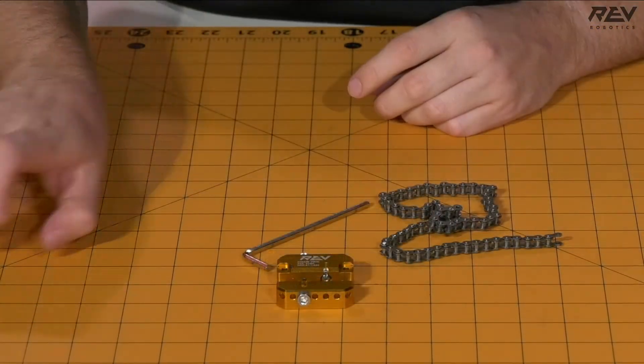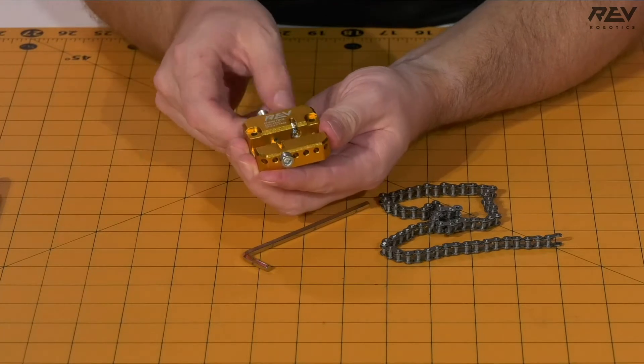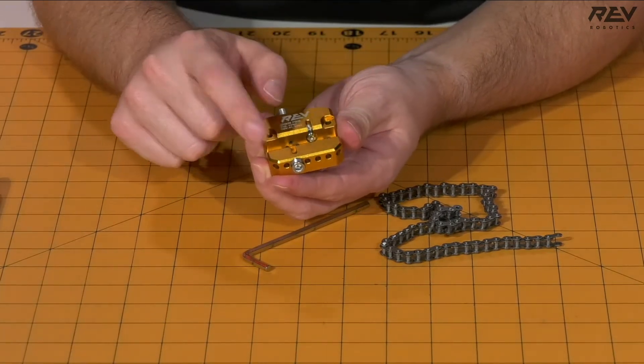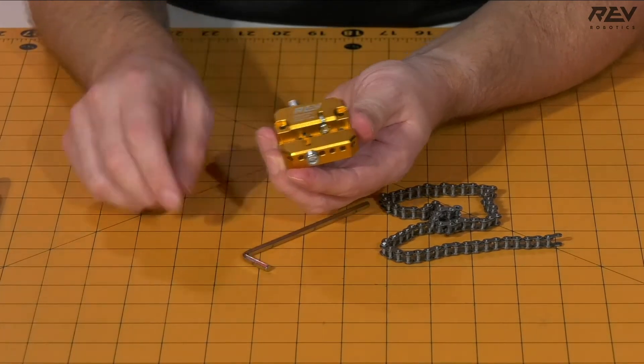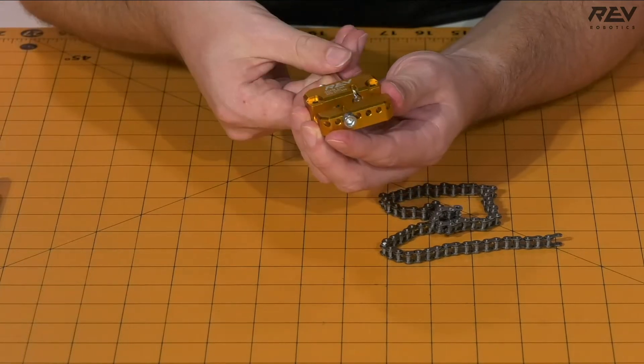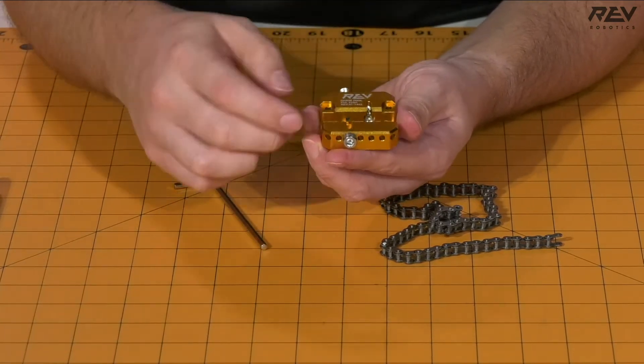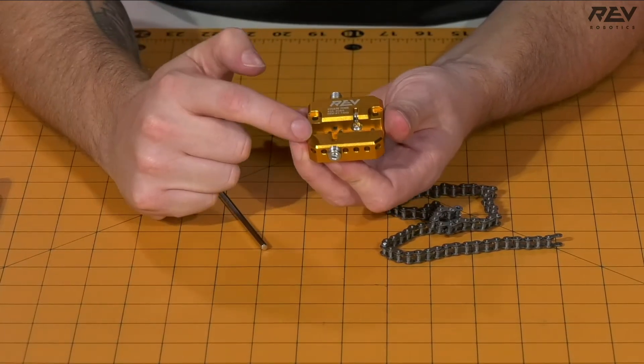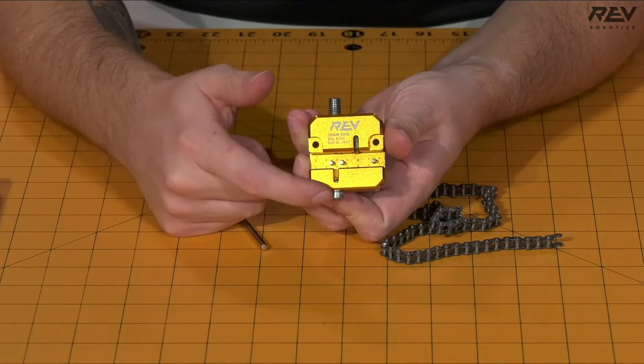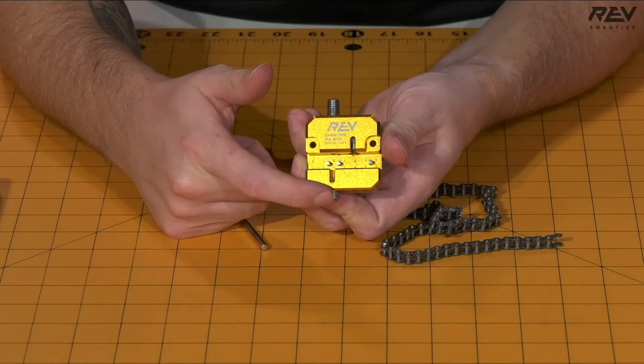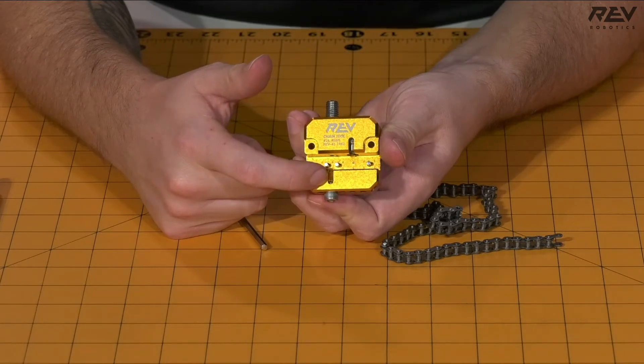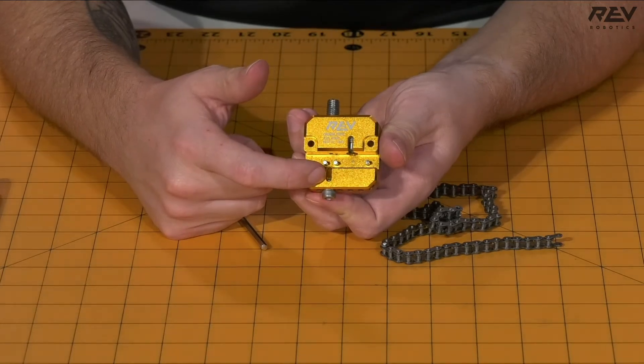We're going to take our chain tool itself. We want to make sure that there is no interference in the guide here, so we're going to pull back our set screws a little bit to make it where we're able to easily put the chain in place. Since we're reseating the pin on the chain, you want to keep the screw down here screwed in and as close to the body of the chain tool as you can get it.